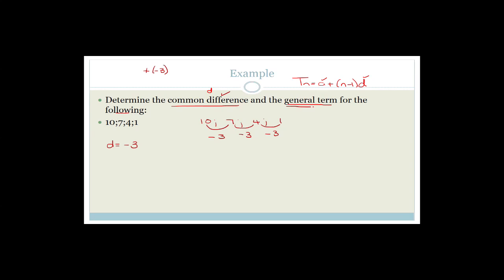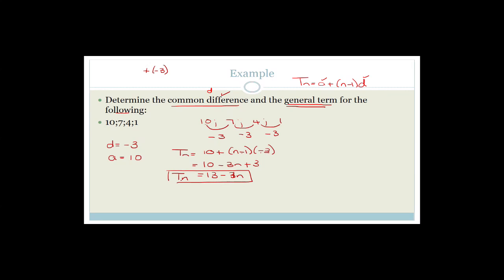They also want the general term. A, the first term, is obviously 10. So TN equals A plus (N minus 1)D, which is 10 plus (N minus 1) times minus 3. That becomes 10 minus 3N plus 3, which simplifies to 13 minus 3N. That is saying that the Nth term will have the value of 13 minus 3N.